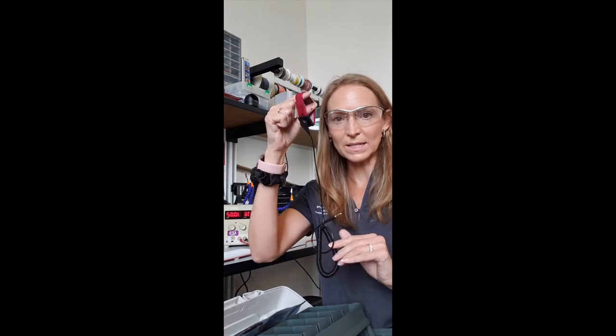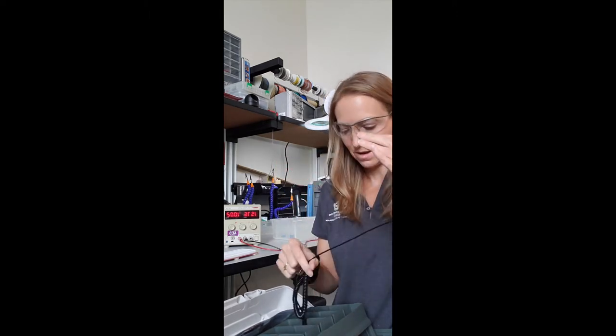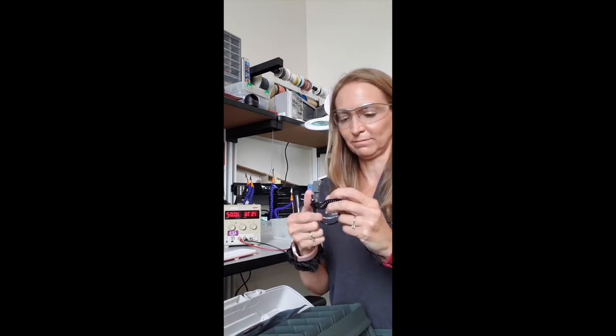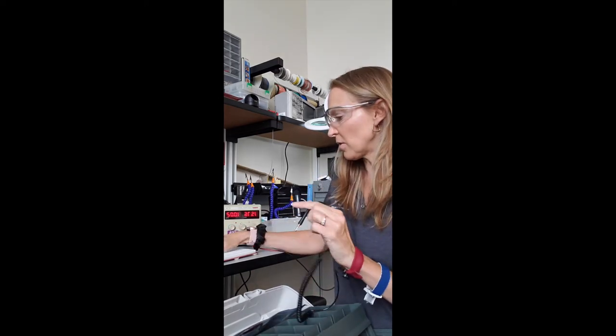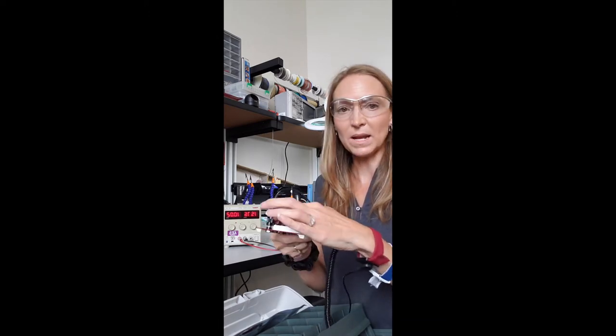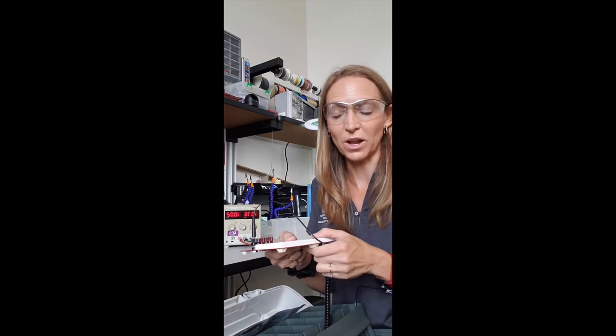The wrist strap looks like this. You put that wrist strap on your wrist and plug the banana connector into the breadboard and then the breadboard needs to be connected with your wires to whatever the ground is in your circuit.